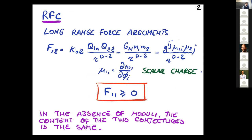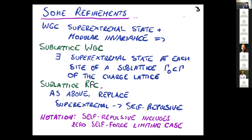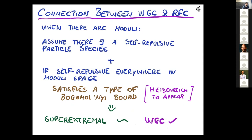The repulsive force conjecture states that there is a particle in the spectrum that is self-repulsive, so the self-force is greater than or equal to zero. It should be noted that in the absence of moduli, these two conjectures essentially reduce to the same. So it's important for us that there actually are moduli.